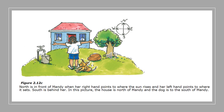On the screen in front of you, north is now in front of Mandy. Her right hand points to where the sun rises and her left hand points to where the sun sits. In this picture, the house is north of Mandy and the dog is south of Mandy.